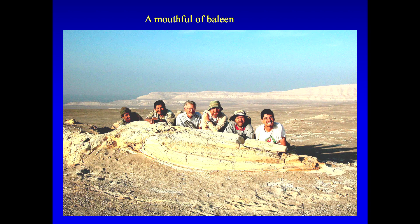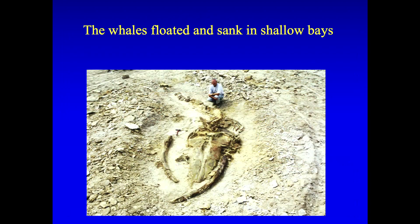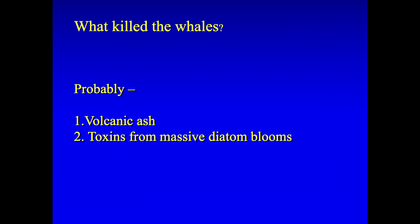And here's the crew by that whale. And so we studied some hundreds of these whales. And they clearly were very rapidly fossilized. They were not beached whales. They floated and sank in shallow bays. And why did they die? Well, probably for at least two reasons. There's a lot of volcanic ash in this sediment from the volcanoes in the Andes Mountains. Breathing volcanic ash is not healthy. It's full of little sharp, glassy shards. So that's a problem. And also, these massive diatom blooms will produce toxins, which can kill large mammals. So probably those two things were the reason there are so many dead whales there.